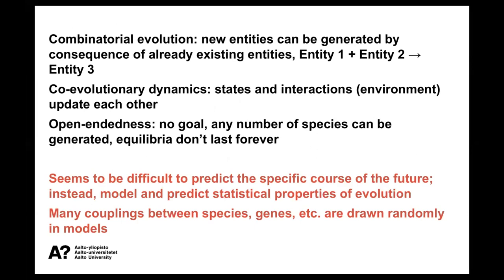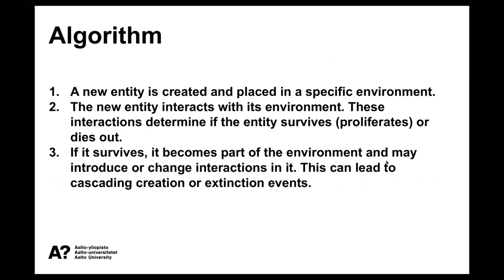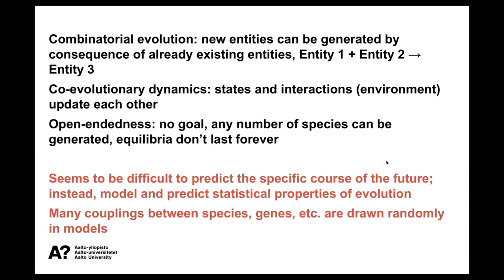There are some principles related to this algorithm. One of them is called combinatorial evolution: new entities can be created as a consequence of already existing entities - two or more entities produce a new kind of entity. For example, we can have an existing species and then radiation from outer space, and these combine to create a mutation and a new species comes into play. Mutations can be modeled this way - two things combine to make a third new thing that didn't exist before.